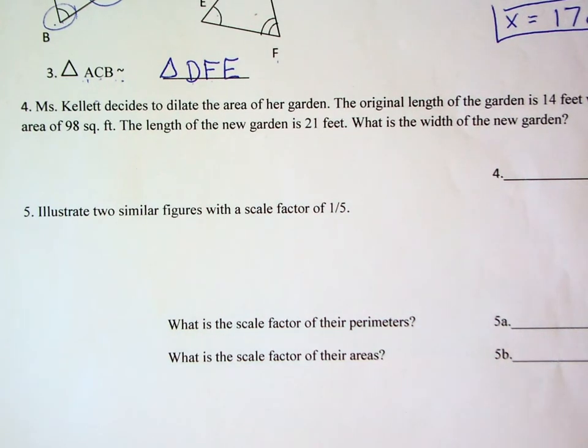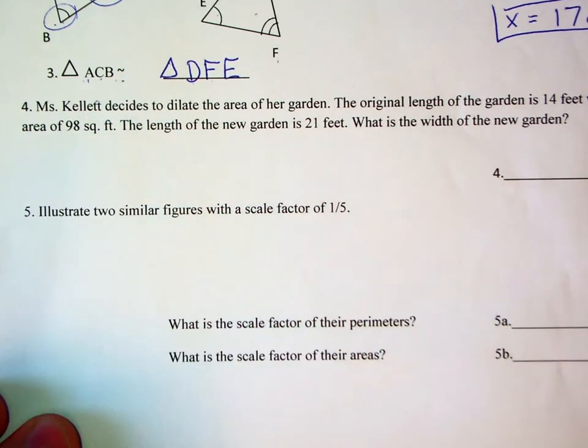Problem number four. Miss Kellett decides to dilate the area of her garden. The original length of the garden is 14 feet with an area of 98 square feet. The length of the new garden is 21 feet. What is the width of the new garden?